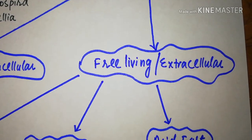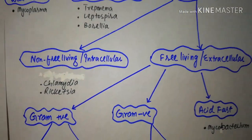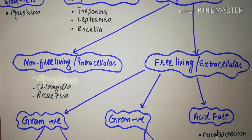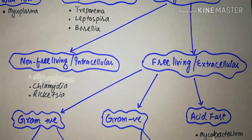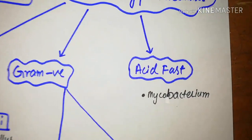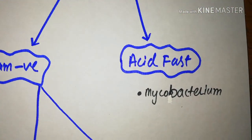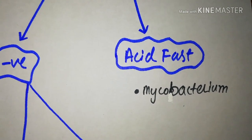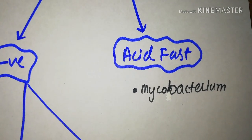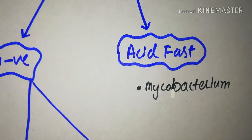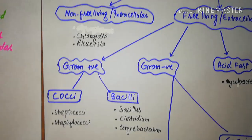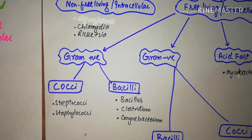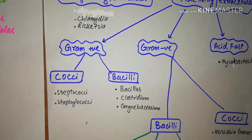The free living is again a large group, so it is divided on the third basis — that is the staining — into gram positive, gram negative, and acid fast bacteria. The acid fast bacteria includes the mycobacterium species like Mycobacterium tuberculosis, Mycobacterium leprae, and Mycobacterium avium intracellulare, etc. The gram positive and gram negative are large groups and are divided on the basis of shape into cocci and bacilli.